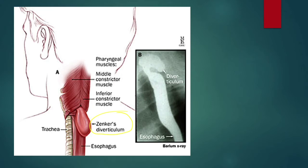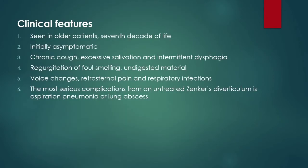A large pouch, which is visible in the neck, can be seen as a globular swelling, which is often tender and smooth. What are the differential diagnoses? We have branchial cyst, cold abscess in the neck, lymph cyst, and hemangioma of the neck.